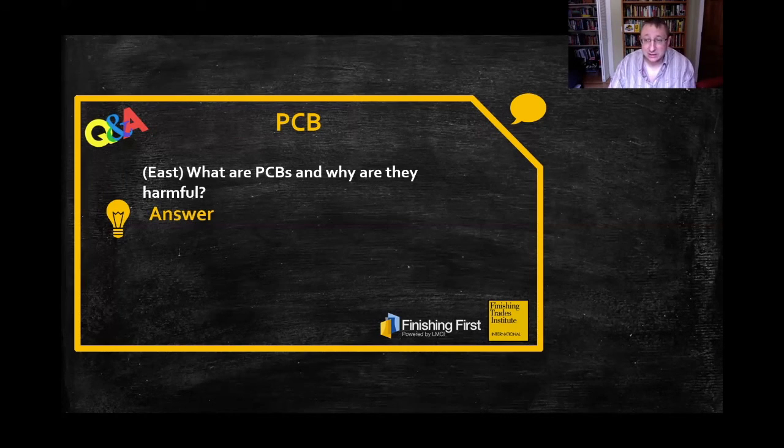Monsanto ultimately was responsible for about 99% of PCB manufacturing in the United States. They were used as additives to many commercial and residential products, including dielectric fluids in transformers and electrical components.